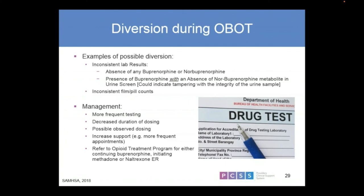How do you manage diversion? Sometimes we need more frequent testing. Decreasing the dosing intervals — going from a month's prescription to a two-week to a week's prescription — may be beneficial. Observing administration of the medication can be important. Increasing support — do they need more frequent appointments, different types of counseling, more family therapy? Other alternatives and modalities may be important as well. Potentially referring to an opioid treatment program for initiating methadone or alternatives may be the next step.